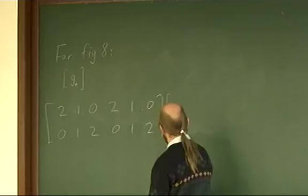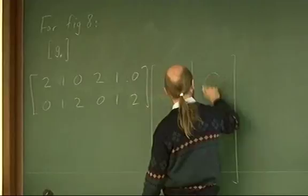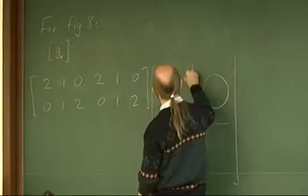What about J? The J thing here — it's going to be a six by six matrix. It's made up of two blocks down the diagonal.